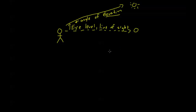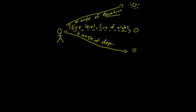Now let's say they're up in the air or looking down at a little bug — some object down below their eye level, below their line of sight. We would call the angle between their line of sight and the line going straight to the object the angle of depression. So just another common term to keep in mind: we have angle of elevation, angle of depression, and line of sight or eye level.